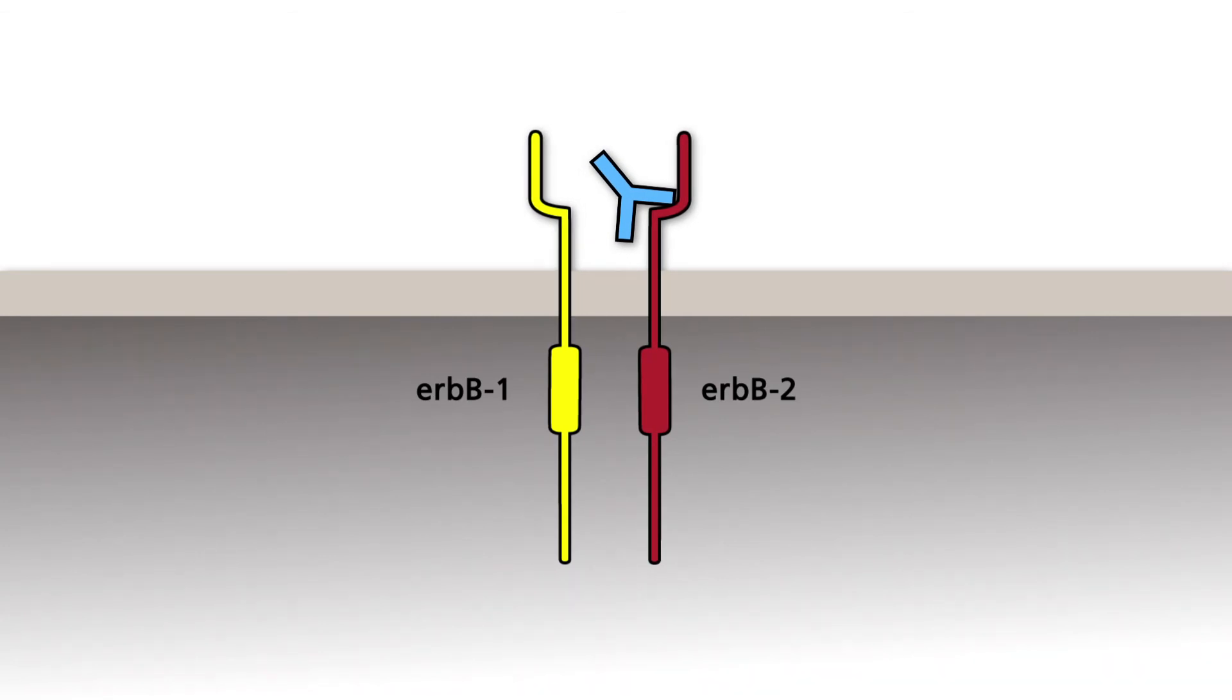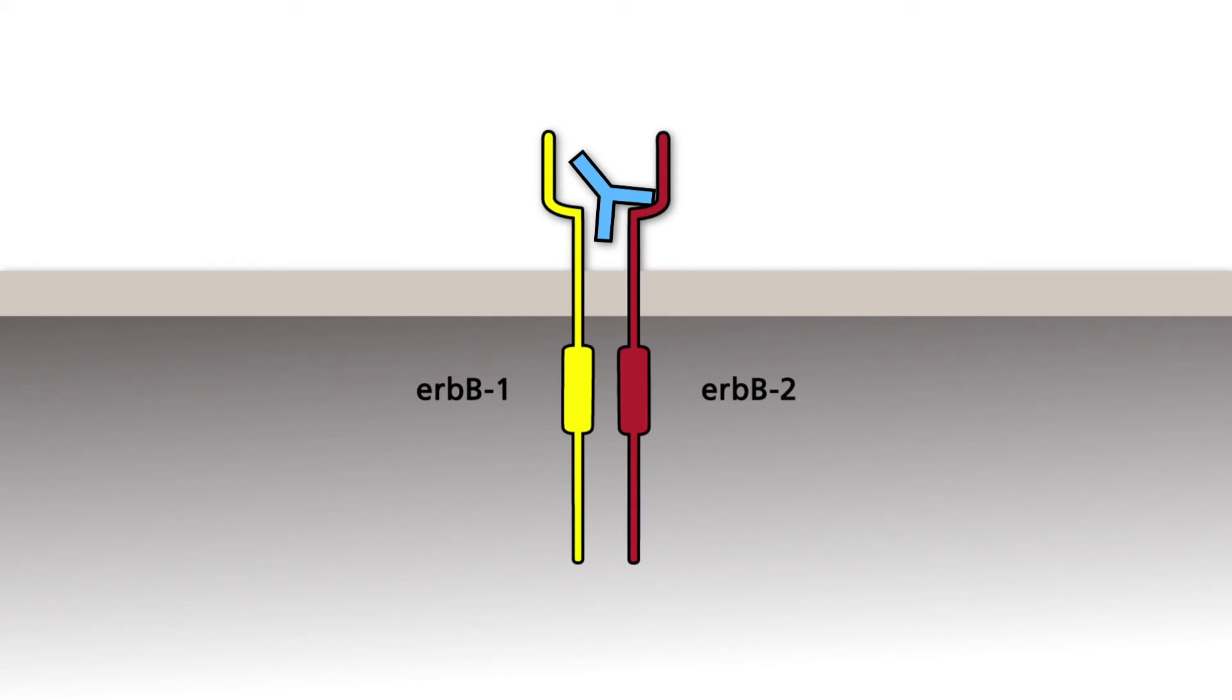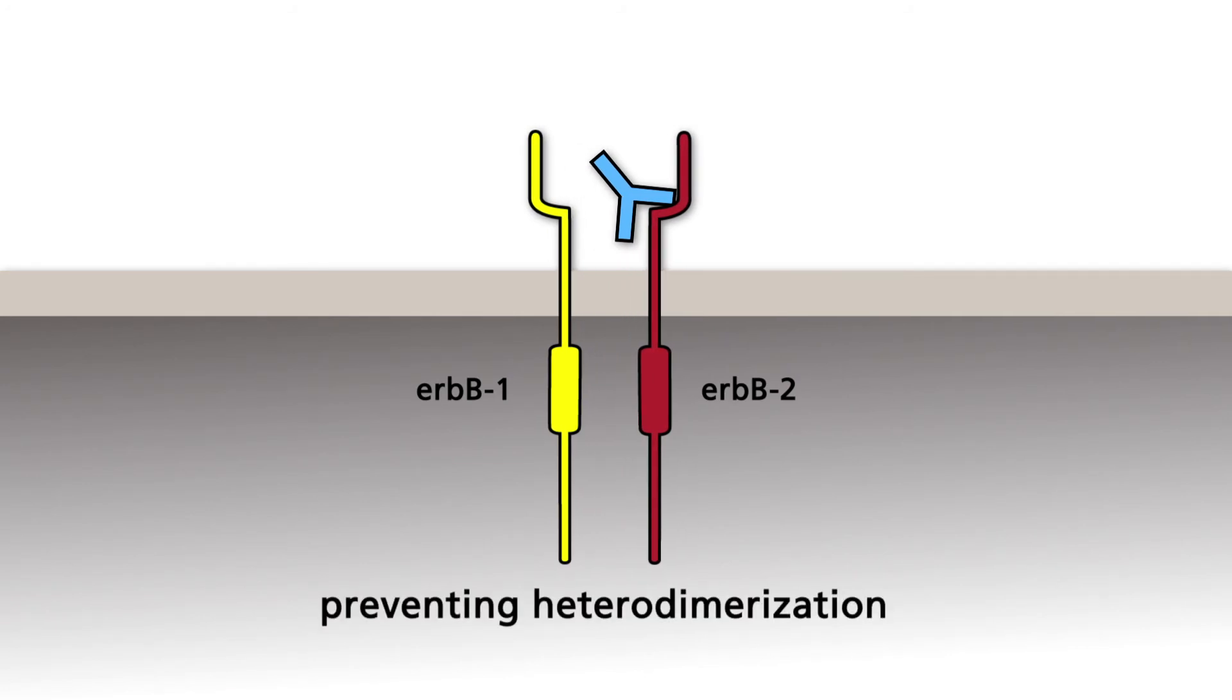The two monomers can no longer dimerize, regardless of whether a ligand, such as EGF, is present or not. Pertuzumab is active in tumor cells independently of the expression level of ERB-B2. It is used in the therapy of several tumor types, including lung and breast tumors.